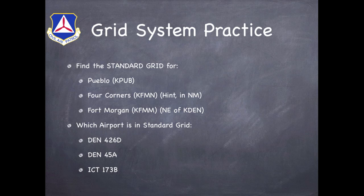So this is where we actually get to put this to practice. Using the CAP standard grid, find the 7.5 by 7.5-minute grid that overlays Pueblo Airport, Four Corners Airport, and Fort Morgan Airport. Remember, you're going to have a sectional designator, as well as a number and then a letter designator for each one of these. Once you've found those, go ahead and find which airports are actually underneath the following grids: Denver 426 Delta, Denver 45 Alpha, and Wichita 173 Alpha. Go ahead and pause the video for a moment and go through these examples, and we'll come back in just a second with the answers.